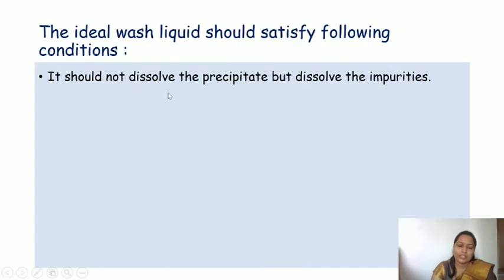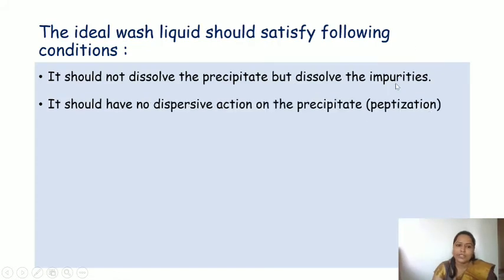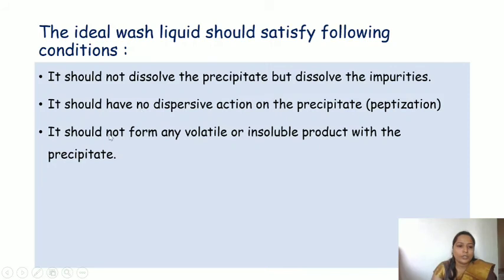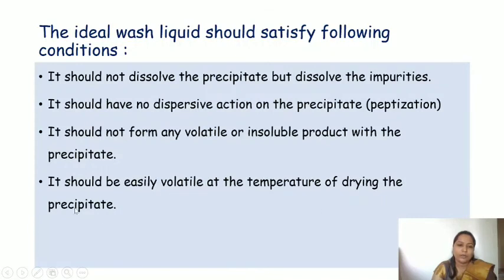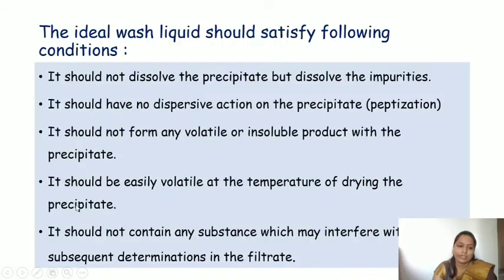An ideal wash liquid should: (1) not dissolve the precipitate but dissolve the impurities; (2) have no dispersive action on the precipitate, such as peptization; (3) not form any volatile or insoluble product with the precipitate; (4) be easily volatile at the temperature of drying of the precipitate; and (5) not contain any substance which may interfere with the subsequent determination in the filter.